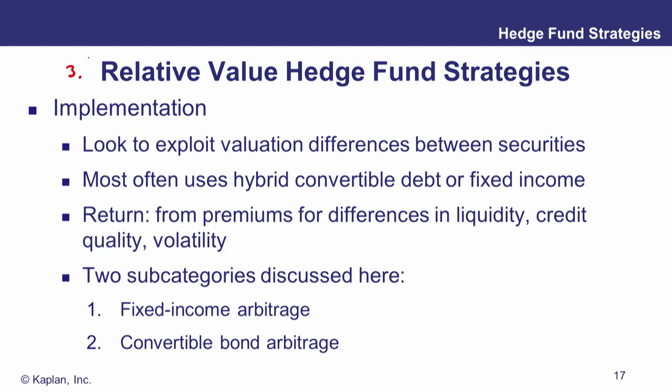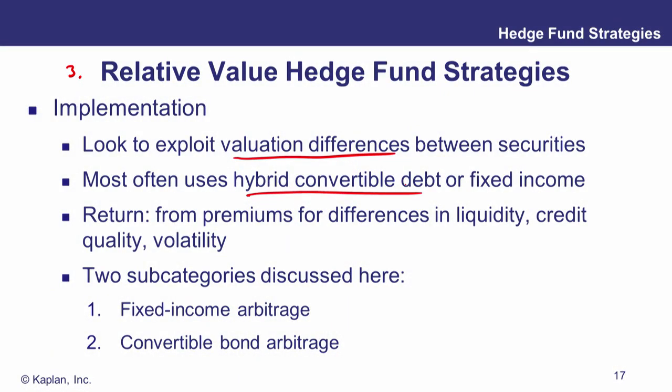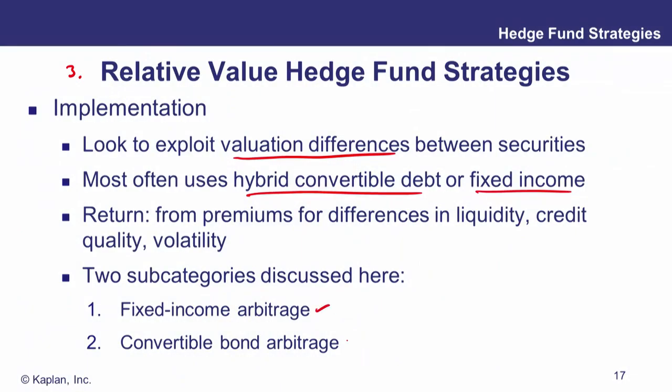Now on to the third of our six overall categories of hedge fund strategies: relative value. As the name suggests, we're looking to exploit valuation differences between securities — going long undervalued and short overvalued. The most commonly used instruments are convertible bonds and straightforward fixed income. Returns are generated mainly from premiums and differences between two bonds: differences in liquidity, credit quality, or volatility. We'll look at fixed income arbitrage and convertible bond arbitrage.